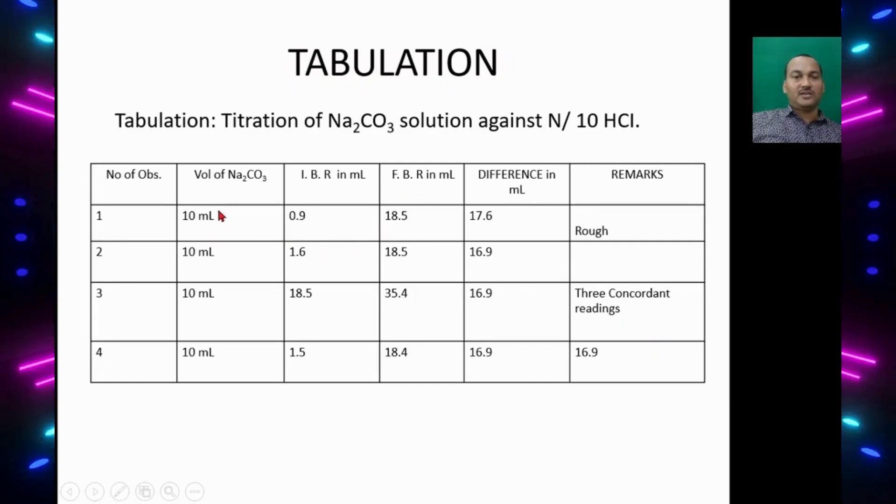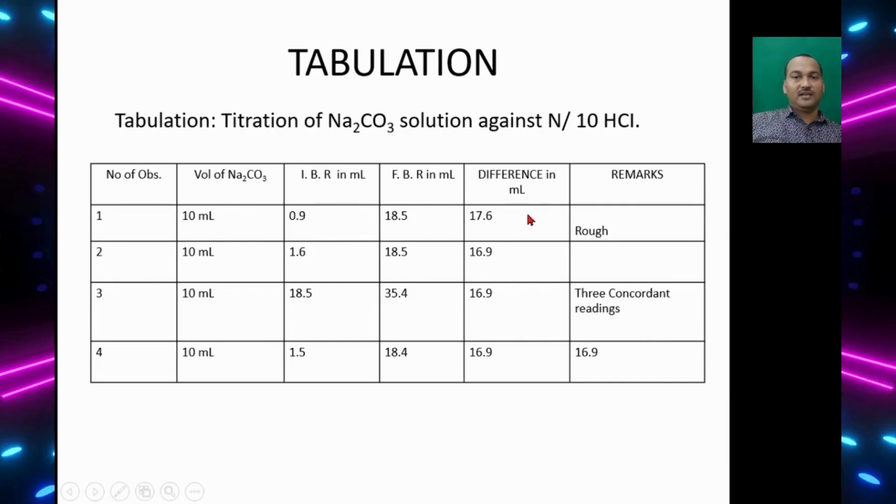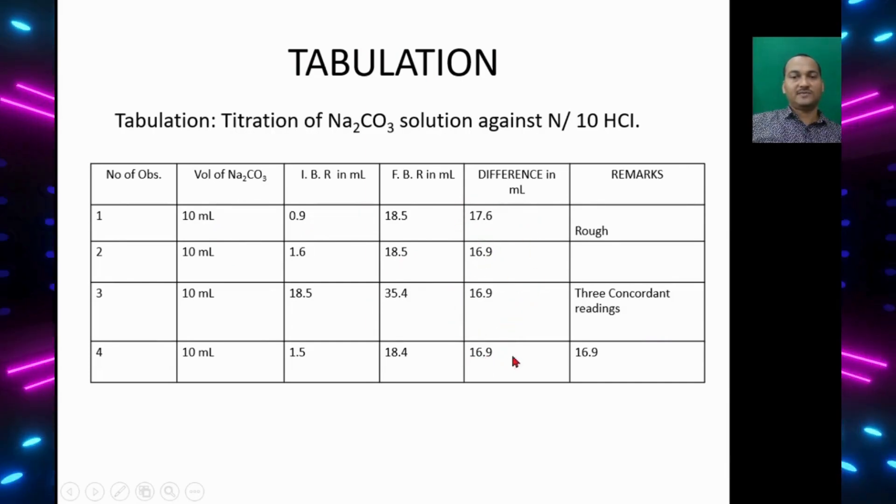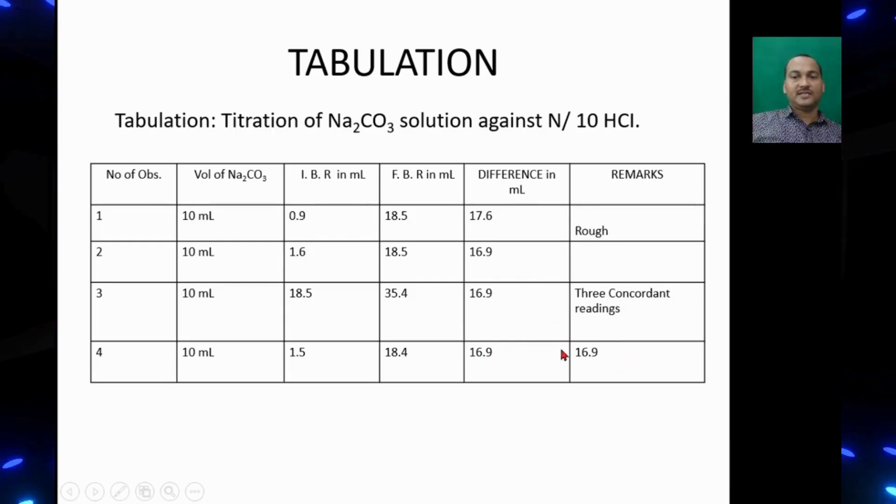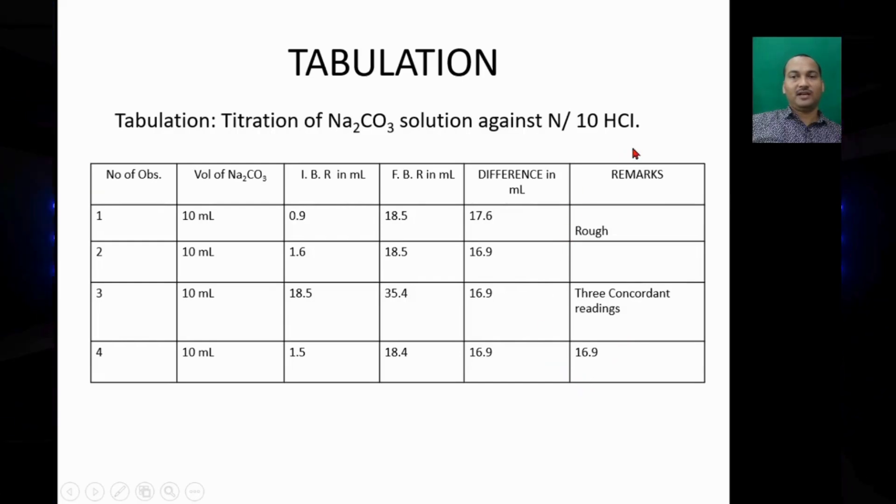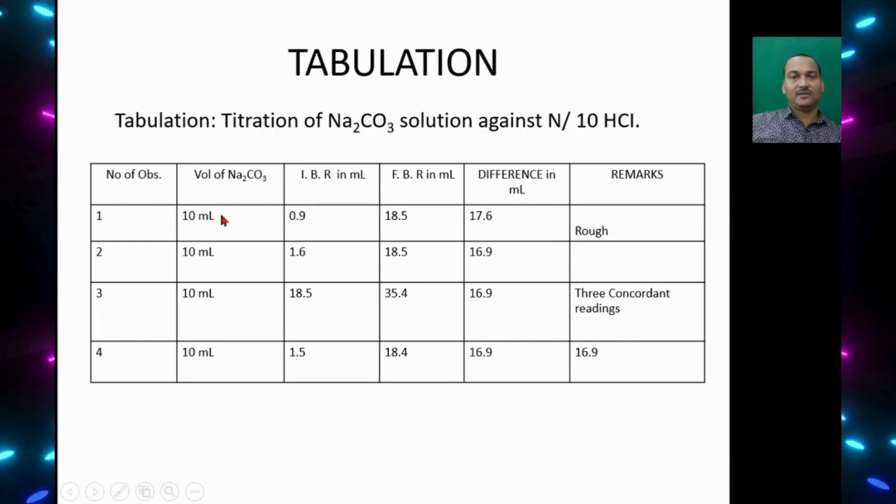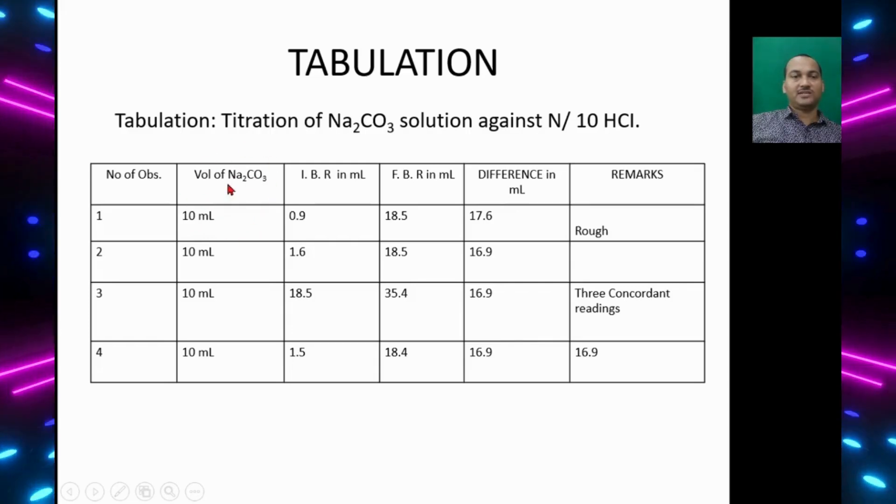Here are some dummy results. You can see the rough reading 17.6 and next three concordant readings you get 16.9. That means 16.9 ml of N by 10 HCl consumed for 10 ml of supplied sodium carbonate solution.